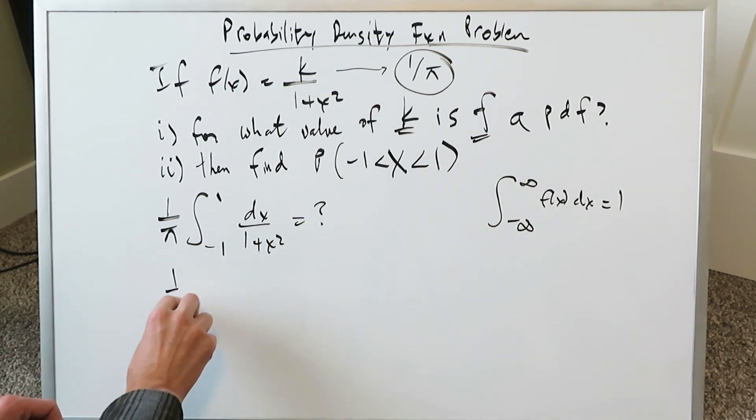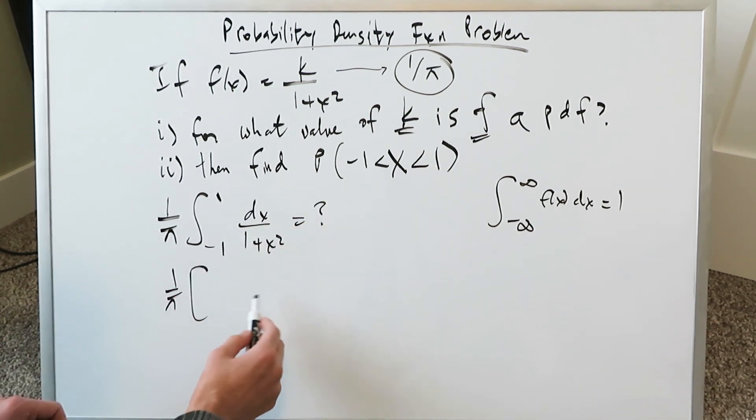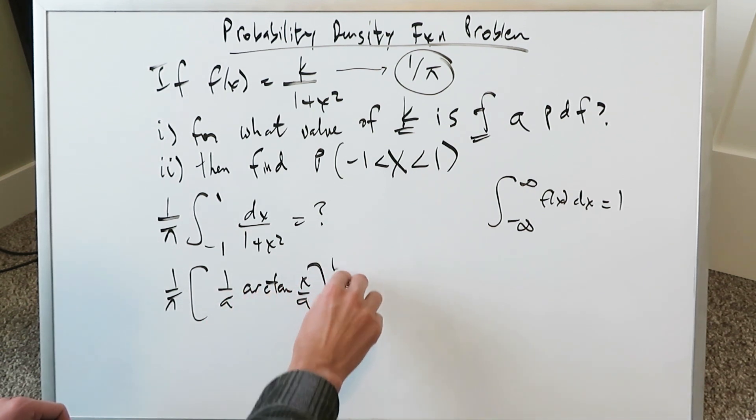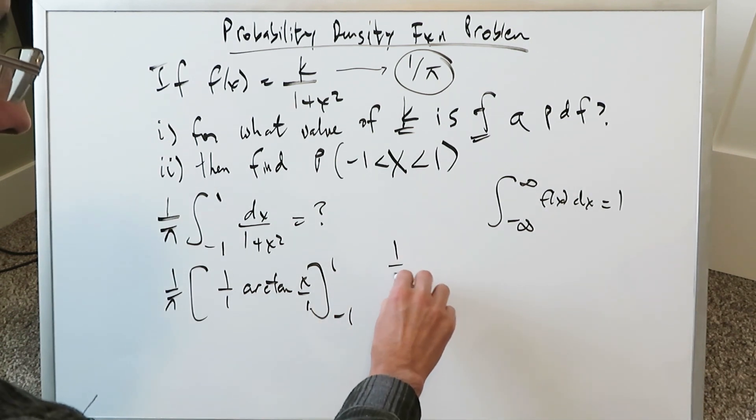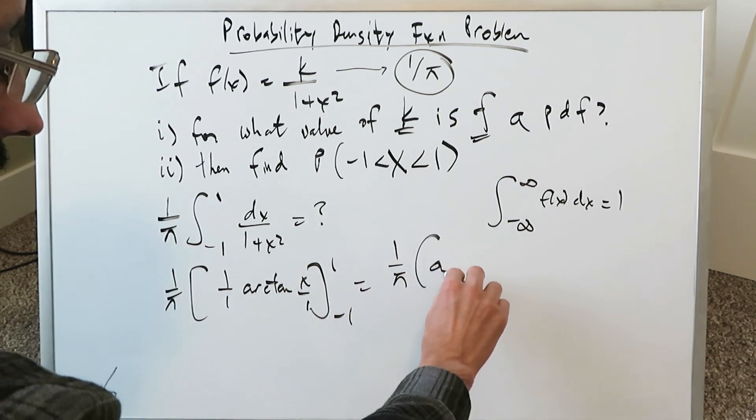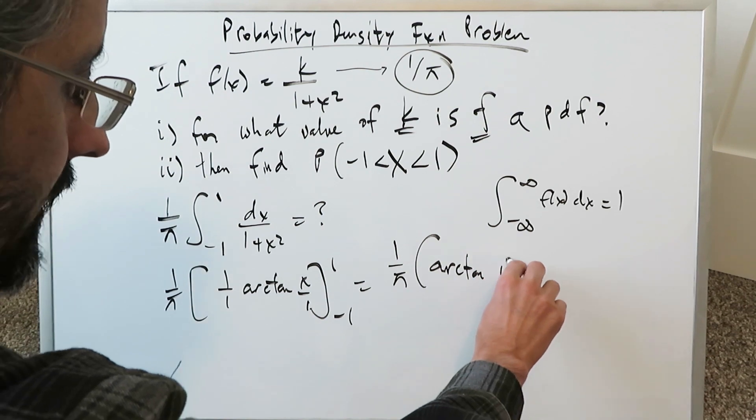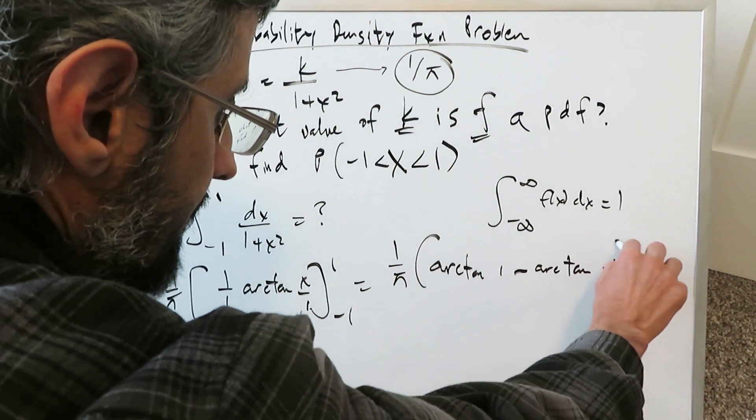We have a dx over 1 plus x squared. You see how our 1 over pi has come out? That's our k value. We have to integrate this. Well, again, we have a 1 over pi, and this right here is again an arctan. It's a 1 over a arctan x over a antiderivative from 1 to minus 1. A's in all instances here are 1. So it's a 1 over 1 and x over 1.